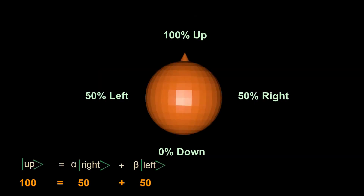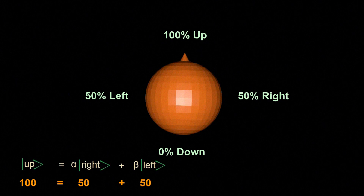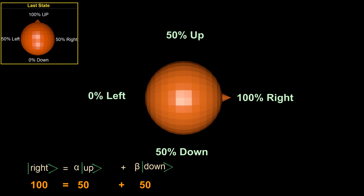Starting in spin up state, which has 50% chance for spin left and 50% chance for spin right — if we rotate it 90 degrees clockwise, spin right becomes 100% because it is being approached, and spin left becomes 0% because it is being left. After rotating 90 degrees clockwise, the electron is now in spin right state and has 100% chance for spin right, and of course spin left is 0%.